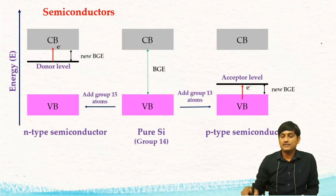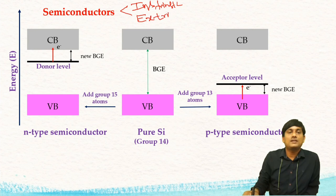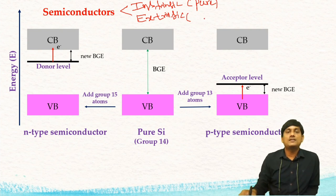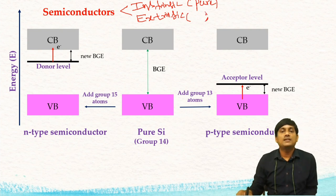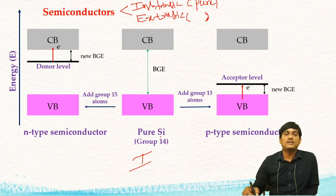Semiconductors can be classified into intrinsic semiconductors and extrinsic semiconductors. Intrinsic semiconductors are pure semiconductors in their elemental state, while extrinsic semiconductors are doped with some other elements. In an intrinsic semiconductor, there is a band gap between the valency band and the conduction band, and you can find these two bands.